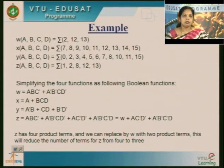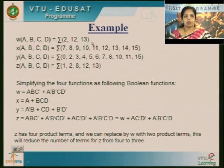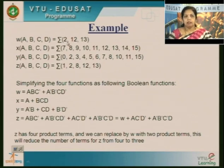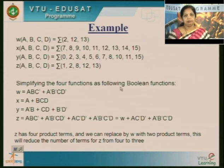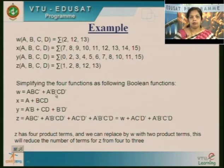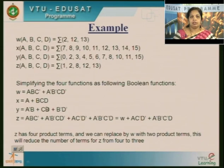We will take an example of implementing functions using PAL with four functions: W, X, Y, Z. The functions are given as minterms. We apply them to a four-variable truth table and simplify. We end up with simplified equations: W = AB complement C complement + A complement B complement C D complement; similarly equations for X, Y, and Z. Note that Z has four terms, and two of those terms are the same as the first function W.